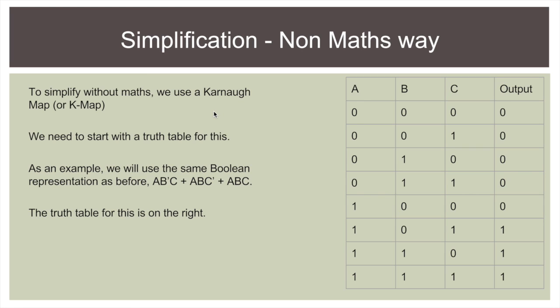So to simplify without maths, we use a Karnaugh map or a K-map. And we need to start with a truth table. As an example, we use the same Boolean representation as before. And the truth table for this is on the right. So A not B C.